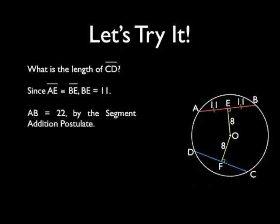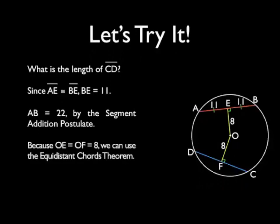You will also notice that segment OE and segment OF are both 8 units long. So the two chords are equidistant from the center of the circle, because of the right angles we know that that is the distance from the center to the chords. And so segment CD has to be the same length as segment AB.